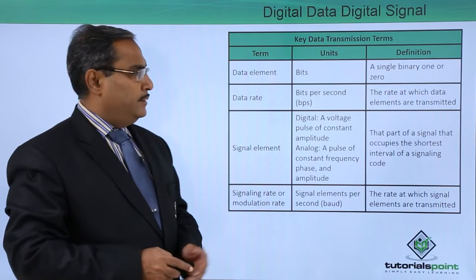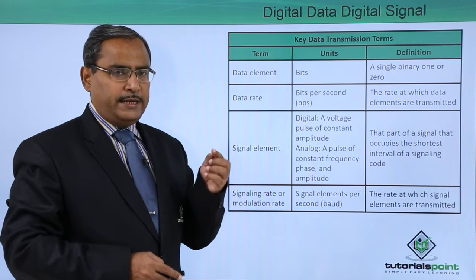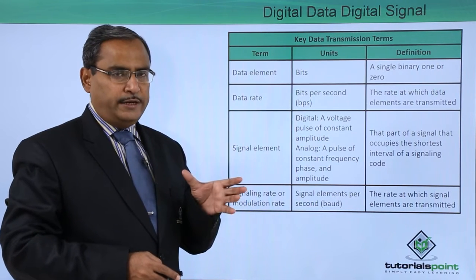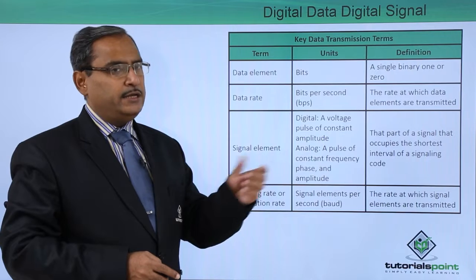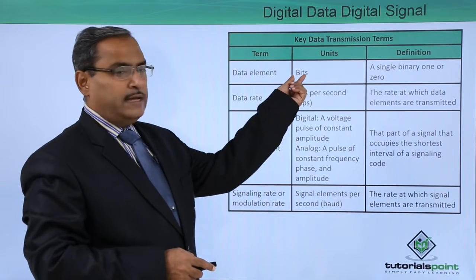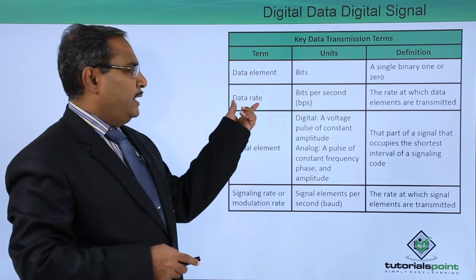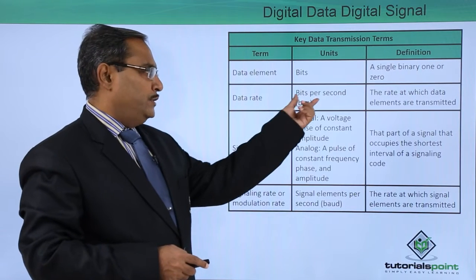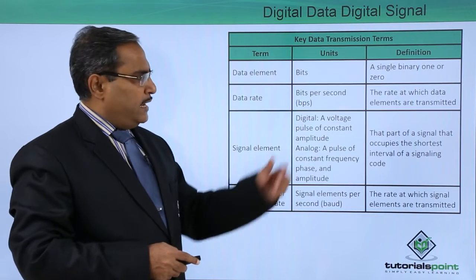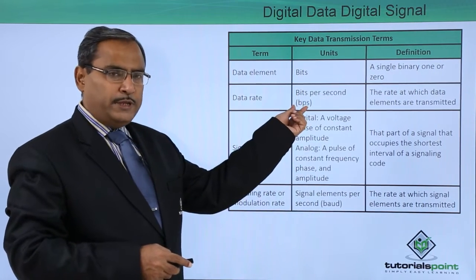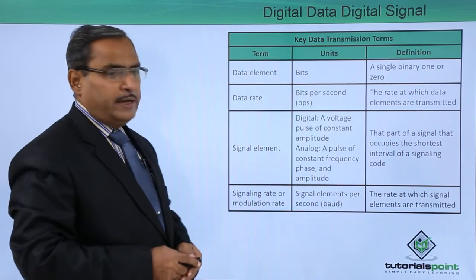First, we are going to define the data element. The data element is a term and its required unit is bits. Bit is the short form — the full form is binary digit. 'B' came from binary and 'it' from digit, forming the word 'bit'. So bits is the unit for data element, meaning a single binary one or binary zero. The data rate can be expressed as bits per second, abbreviated as bps. If it is bytes per second, the 'B' will be in capital. The data rate is the rate at which data elements are transmitted.